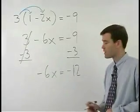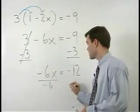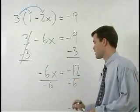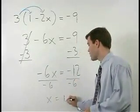To get x by itself just divide both sides by negative 6 and we have x equals positive 2.